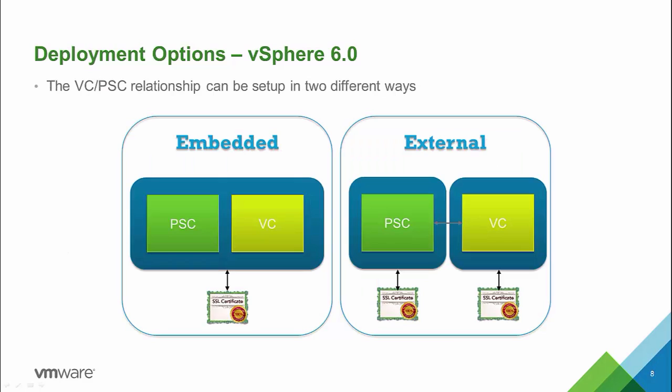The two components can be set up in two different ways. One is the embedded model where you install the Platform Service Controller and vCenter Server on the same machine, or externally where you install the Platform Service Controller on one machine and the vCenter on another. In the embedded model you have one SSL certificate endpoint. For the external model you will have as many endpoints as you have Platform Service Controllers and vCenters interlinked.